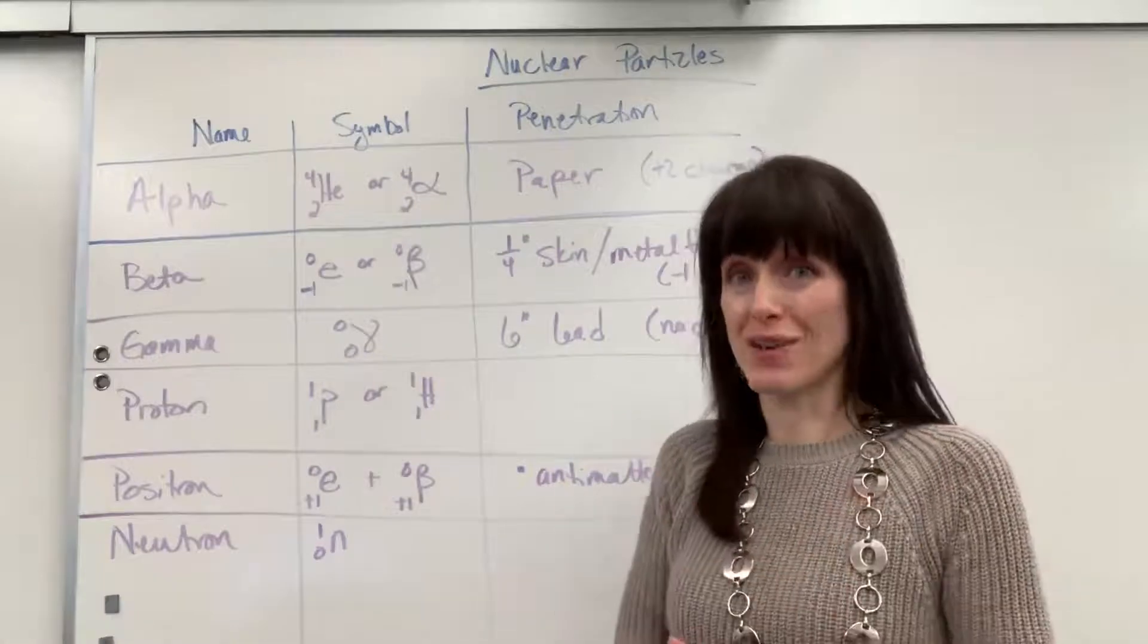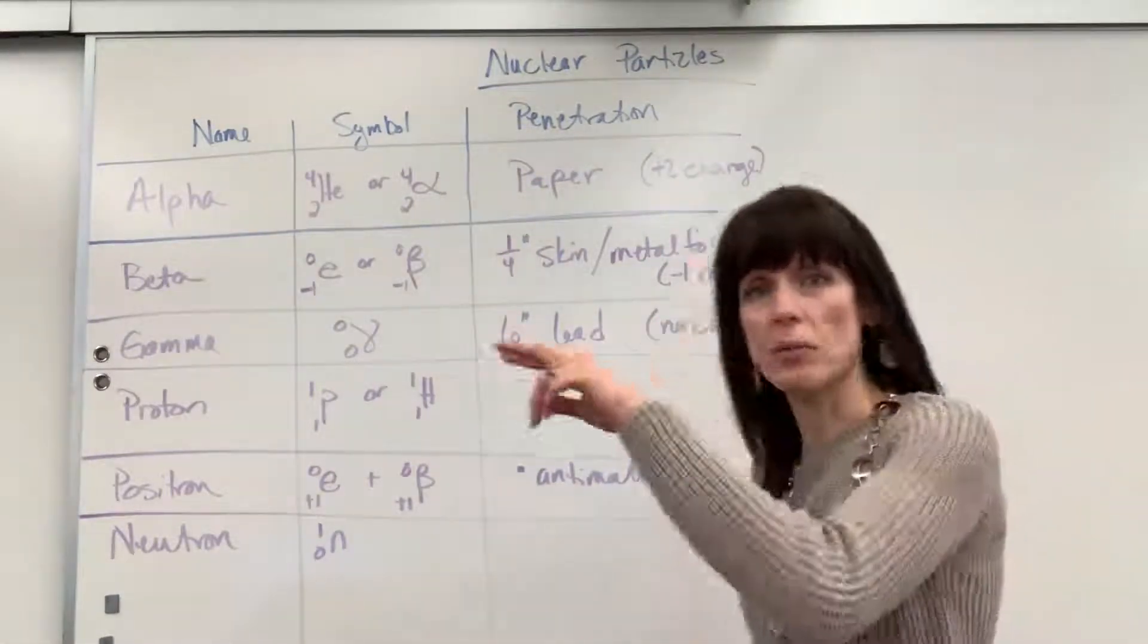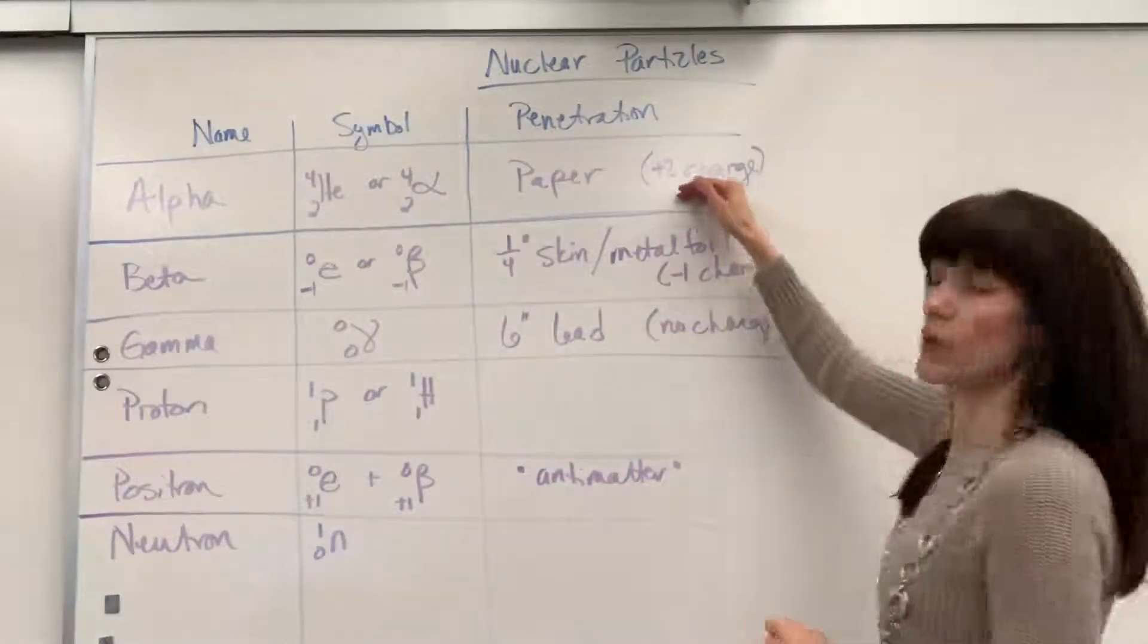Now this has no electrons around it and so it has a plus two charge. You only have the two positive protons in the middle of the nucleus and no electrons. So it gets a plus two charge.